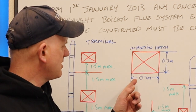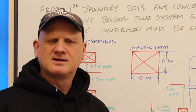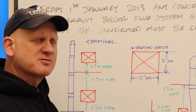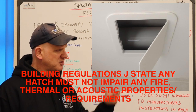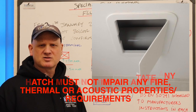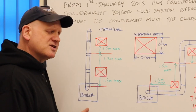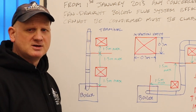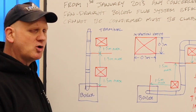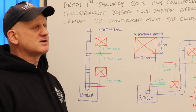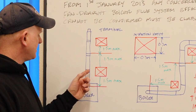To overcome flues in voids, we need to install inspection hatches. These must be a minimum of 300mm square so you can get your head through and have a look. They are specialist hatches — fireproof — so they maintain the integrity of the building. You can't just put a big hole in and cover it with a bit of plasterboard, and boxing with multiple screws that isn't easily removable doesn't count as an inspection hatch. These hatches must be no more than 1.5 meters away from a joint.